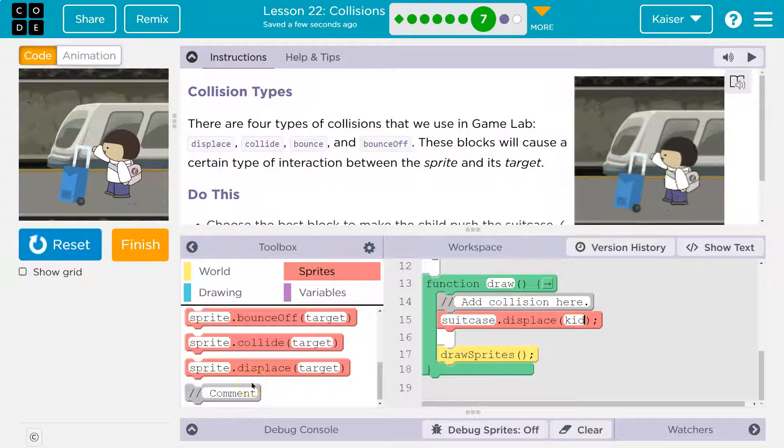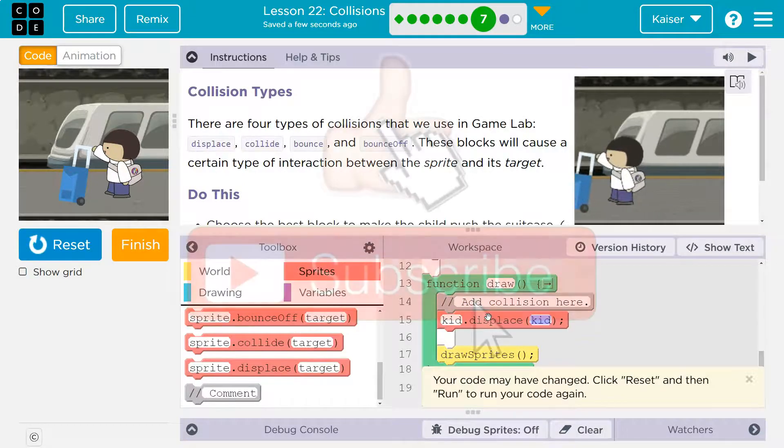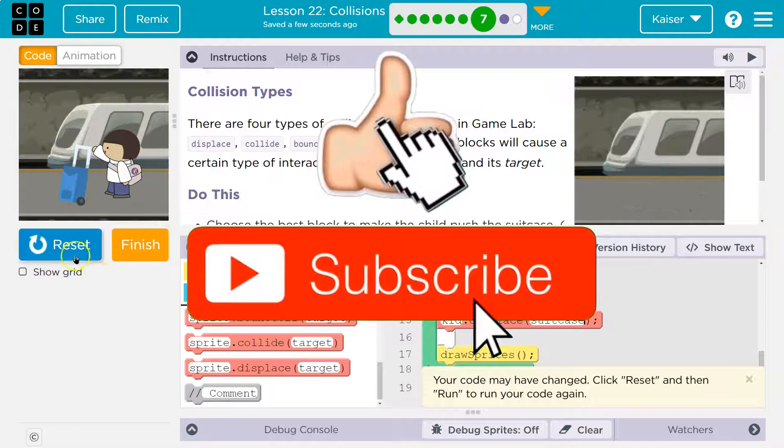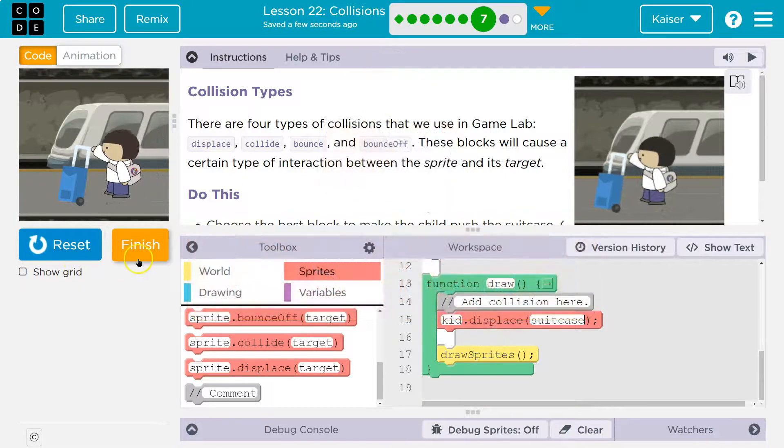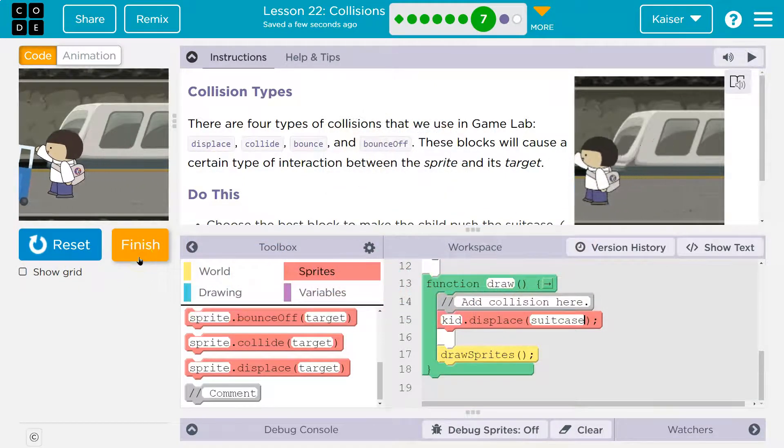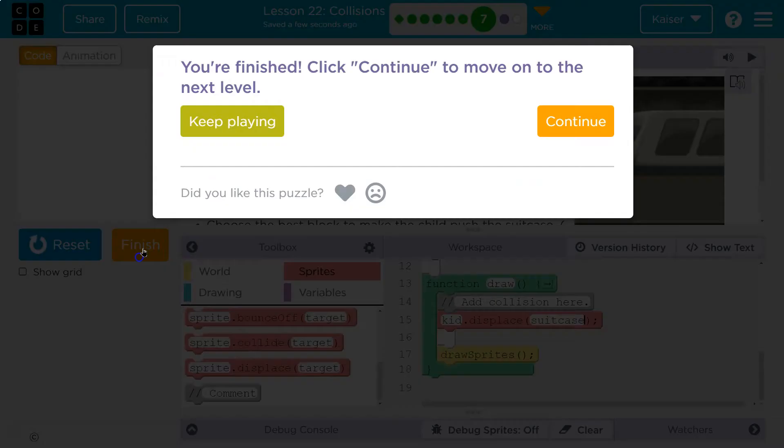Notice that the suitcase is not going to be displacing the kid. Well, it kind of is—it stops them, but there's no pressure, there's no force. Whereas the kid will move the suitcase because the kid has force already. So make sure you get those in the right order. Cool, onward.